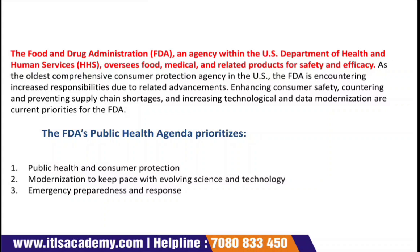The agenda of the FDA includes: first, protecting public health and consumer protection; second, modernization to keep pace with evolving science and technology; and third, emergency preparation and response. If there is a contamination in a food product, the FDA also helps with emergency preparation and response — determining how to avoid a pathogen at the last moment.